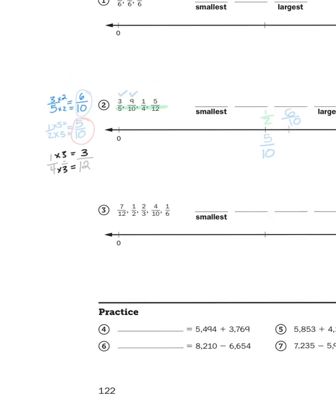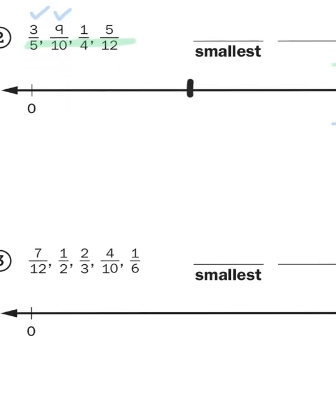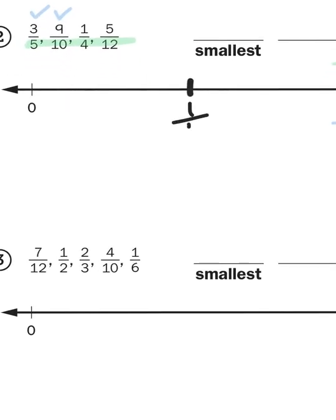Now why is that useful? First of all, where would I plot one-fourth on this number line? Well, one-fourth is halfway between zero and one-half, so here's where I would put one-fourth - one-fourth of course being equivalent to three-twelfths.